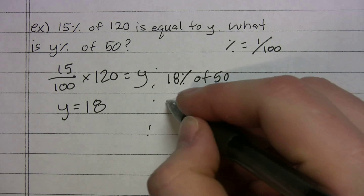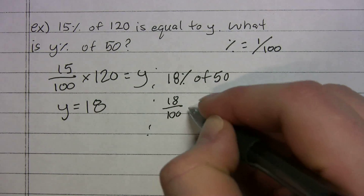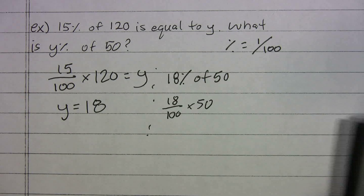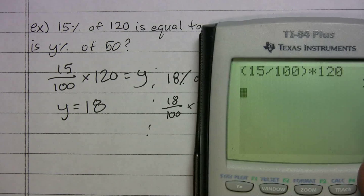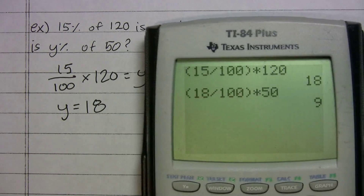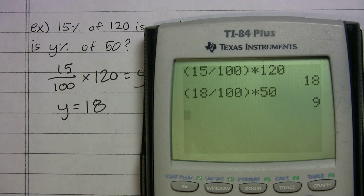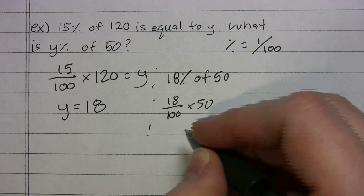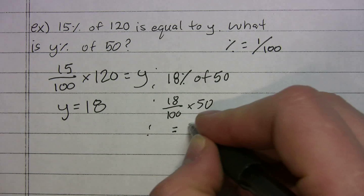Now we want to know what is y percent — that is, 18 percent — of 50. That translates to (18/100) × 50. Using the calculator: 18 ÷ 100 × 50 = 9. So the answer for this one is 9.